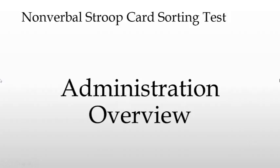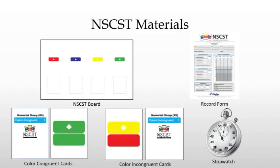Let's give an overview of administering the nonverbal Stroop. Of course, you'll want to have read the manual extensively and practiced giving the test before actually administering it to any client. The materials needed are all contained within the nonverbal Stroop kit. They consist of the nonverbal Stroop board, a record form for each client, the color congruent cards from 1 to 32, the color incongruent cards from 1 to 72, and a stopwatch accurate to the second.